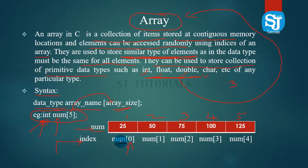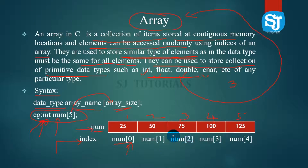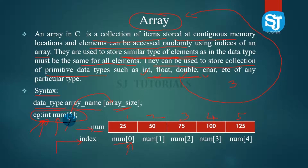Here, you assign values: Number[0] is V1, Number[1] is 3, Number[2] is V2 which is 4, Number[3] is V3 which is 5, Number[4] is V4. Since the array has 5 elements, the maximum index is 4.